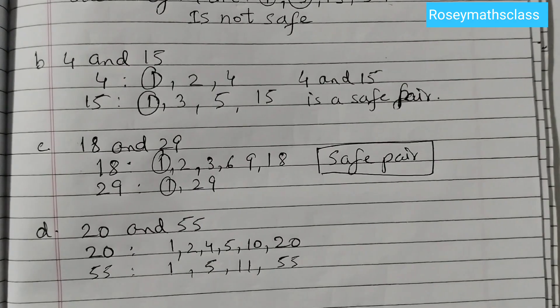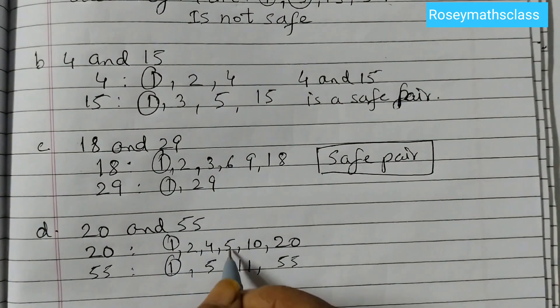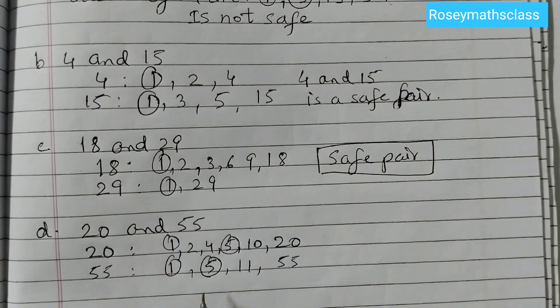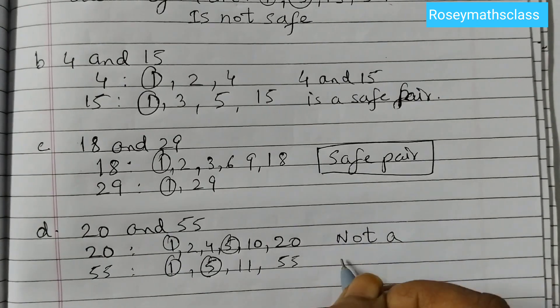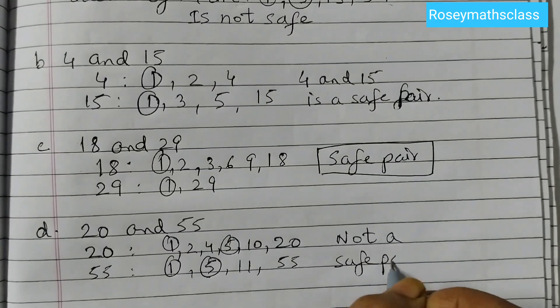Let's check the common factors: 1 and 5. We have 5 as a common factor. The rule is the only common factor must be 1, which means this is not a safe pair.